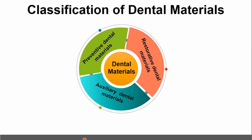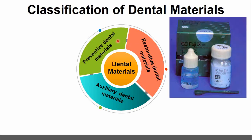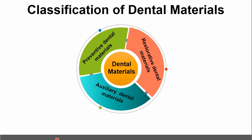The classification of dental materials is not very straightforward. We cannot easily divide materials into preventive, restorative, or auxiliary categories because some materials are classified into more than one group. For example, glass ionomer cement is included in both preventive and restorative dental materials, and the same applies to some other materials too.